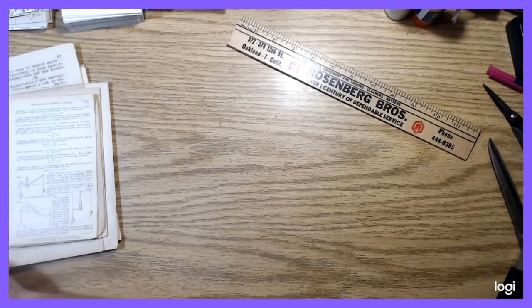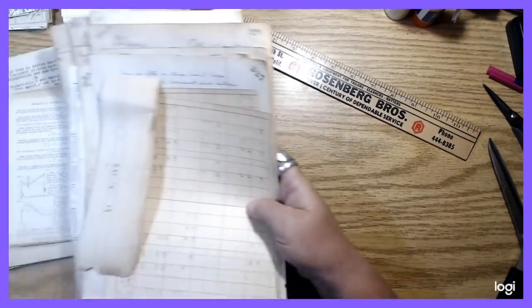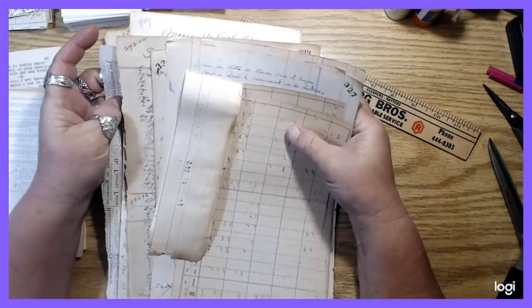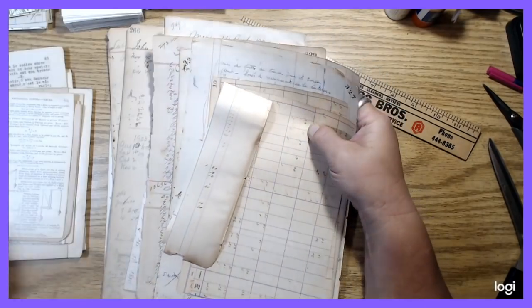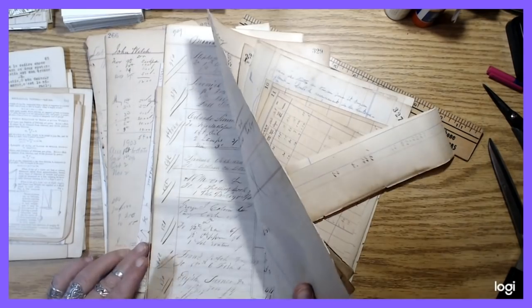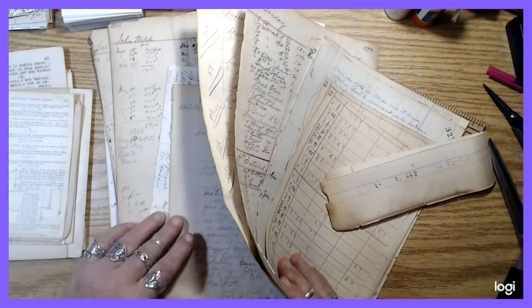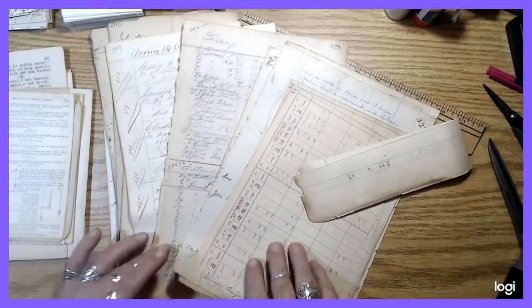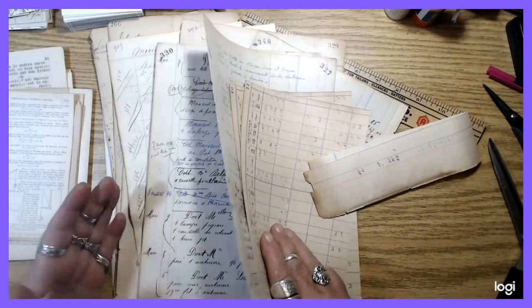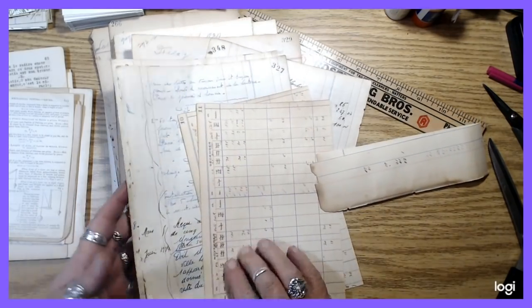As you guys may already know, I've got a thing for ledgers and ledger pages. So I just pulled pages from a bunch of different ones, a couple of scraps, just looking at different types of handwriting. Some were, this one is in French.